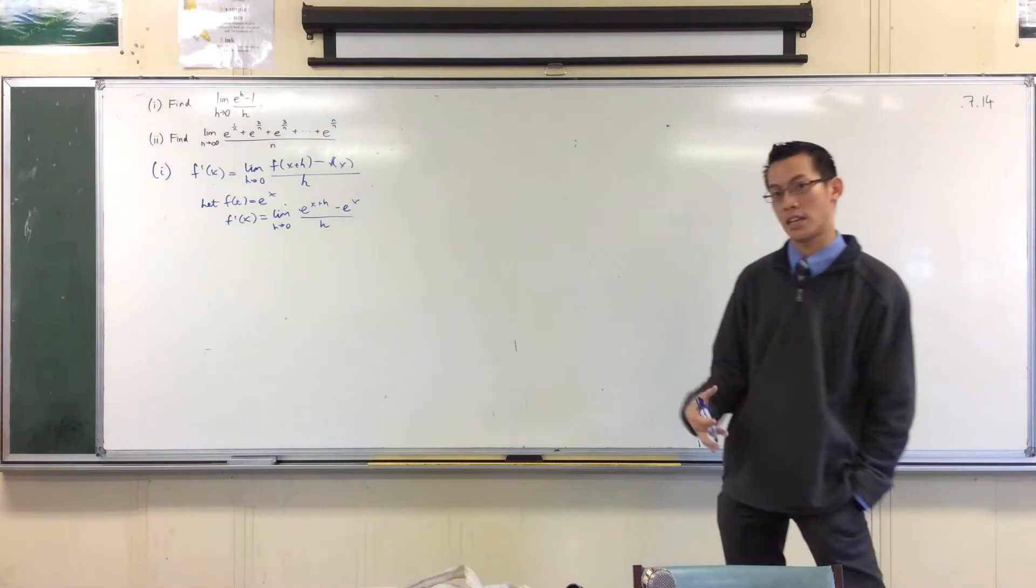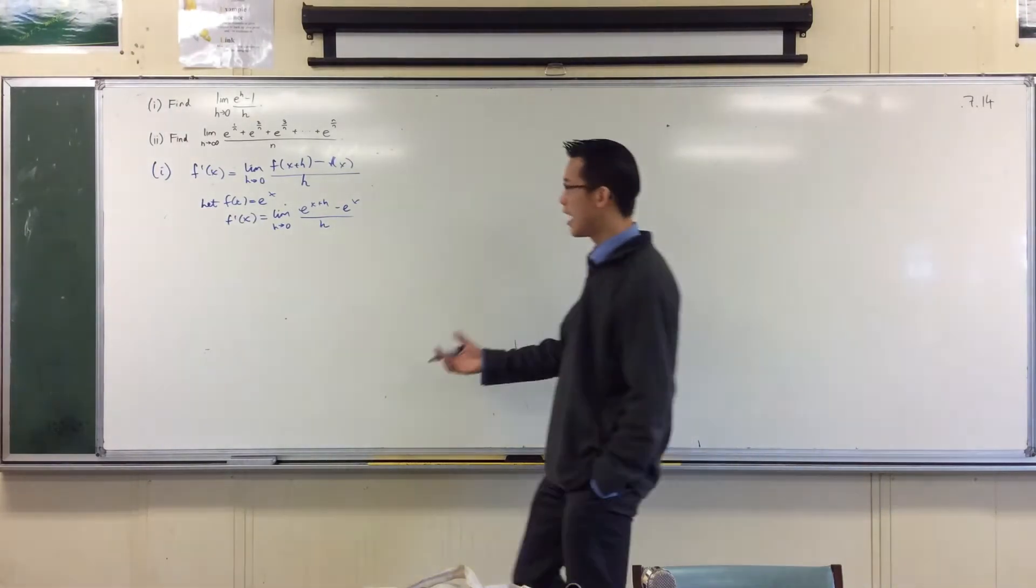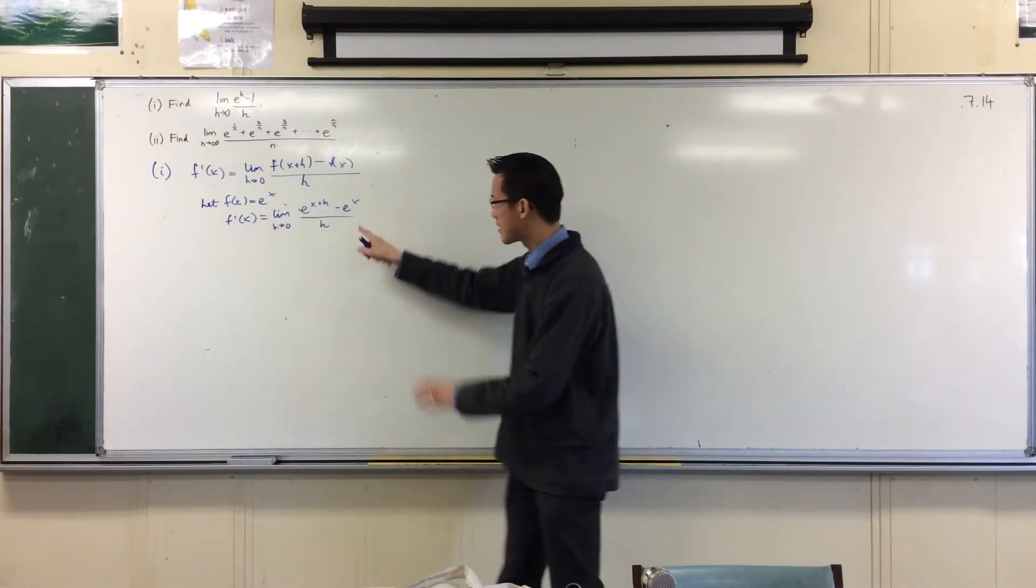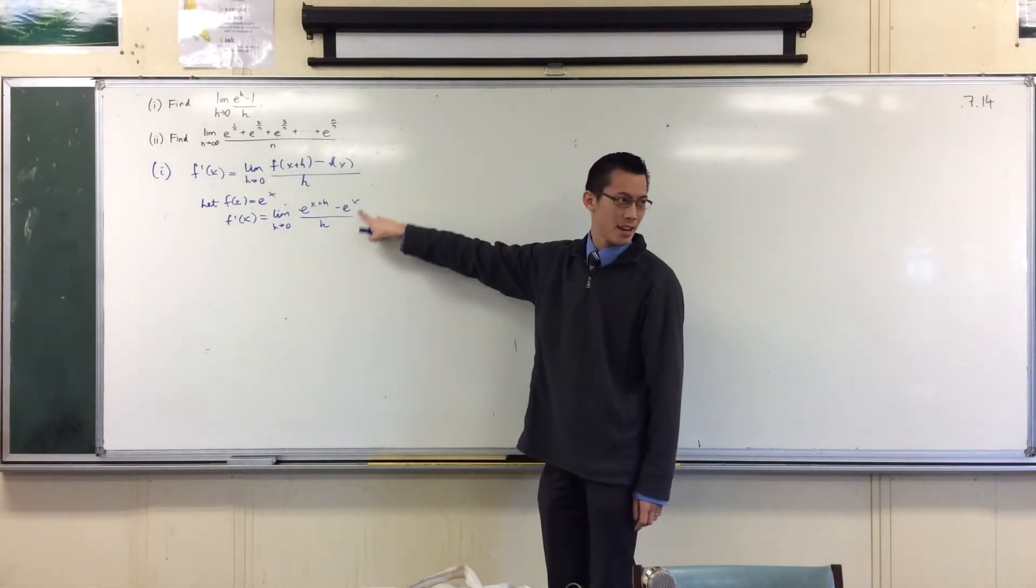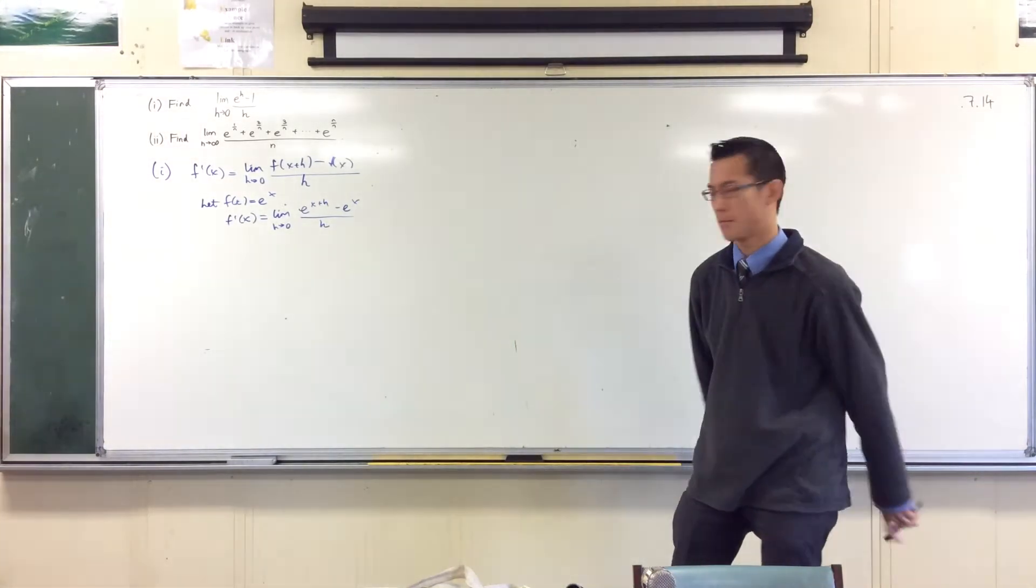Now, by the way, one of the reasons why this doesn't tend to appear in your earlier limits questions is because unlike say a polynomial or even something with a square root in it, it's difficult. So how do you resolve this? How do you cancel that h on the bottom? There's no simple algebraic tricks you can use to do that.